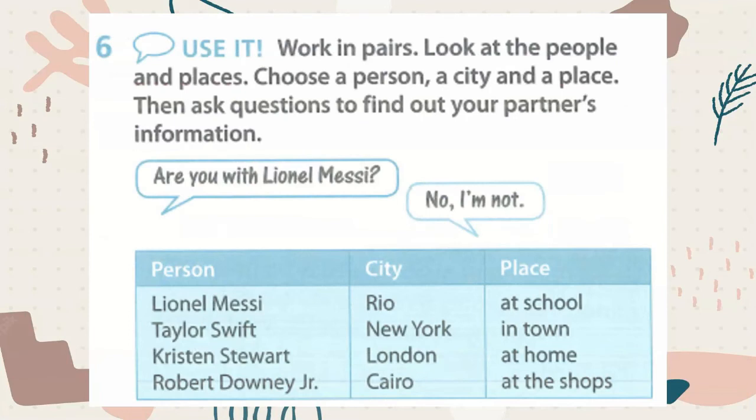Work in pairs. Look at the people and places. Choose a person, a city, and a place, then ask questions to find out your partner's information. For example: Are you with Lionel Messi? No, I'm not. Are you with Taylor Swift? Yes, I am. This is how you answer and discuss in pairs.